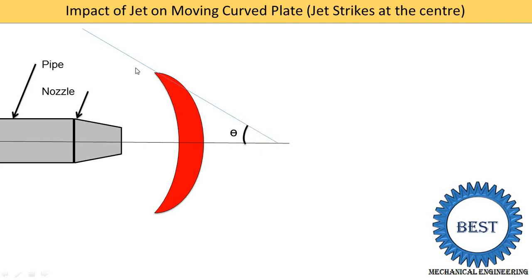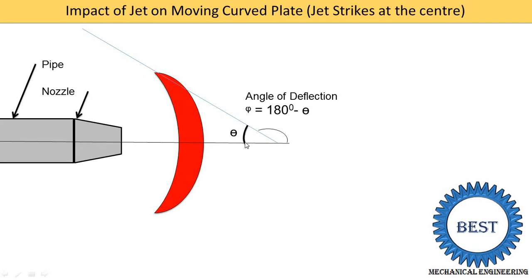Theta is the angle at which the jet leaves from the plate. This angle is known as theta. The other angle is known as the angle of deflection, represented as phi. So phi is equal to 180 minus theta. During solving examples, the angle of deflection is given, and from the angle of deflection we find out theta.